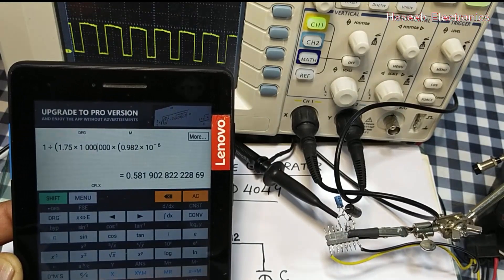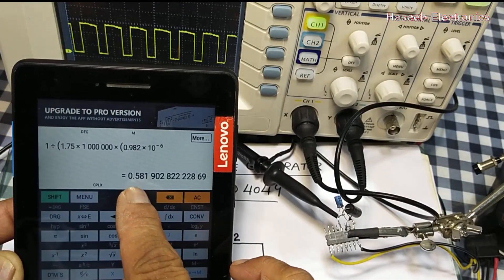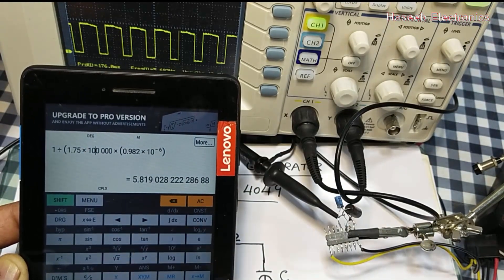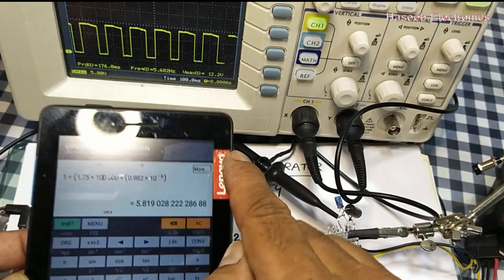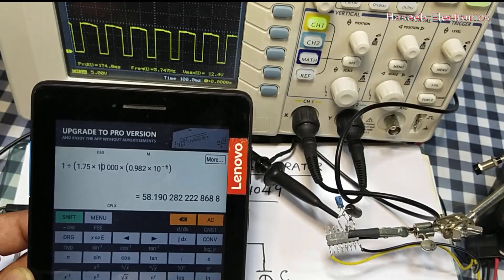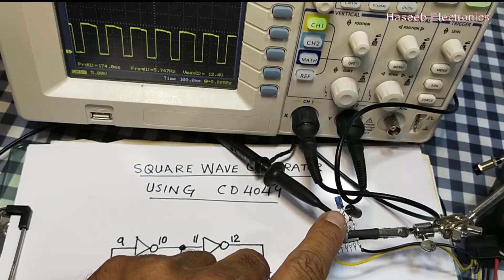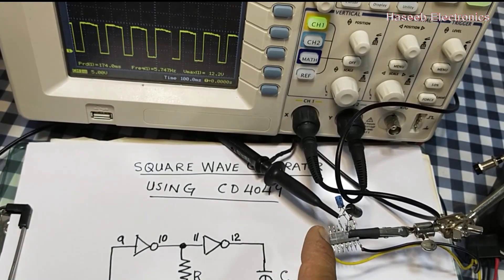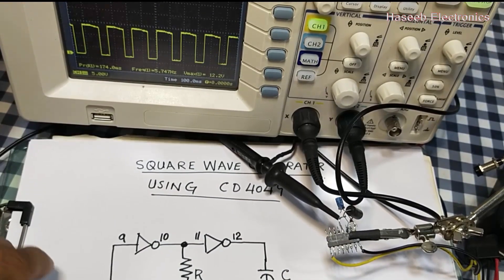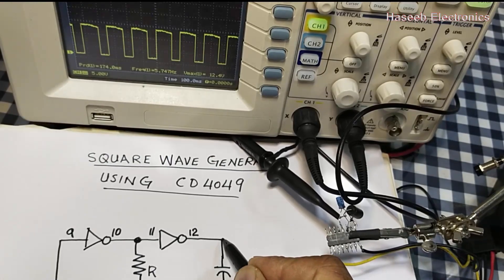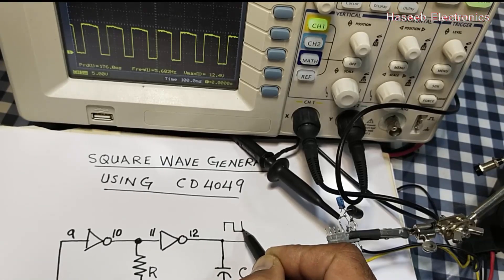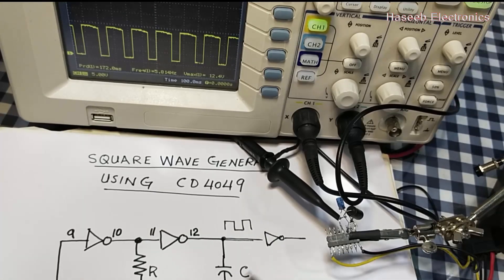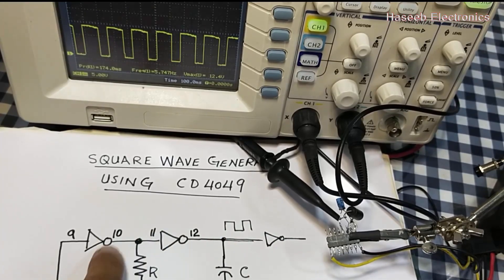The calculated frequency is 5.814 hertz. If we set the resistor to one megaohm, the frequency will be 0.58 hertz. When the resistor value increases, the frequency decreases. With 100 kilohms it is 5.81 hertz, and with 10 kilohms the frequency will be 58 hertz. For a more stable output it is better to take the output through a buffer inverter, so that any load will not affect the oscillator.